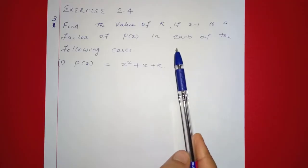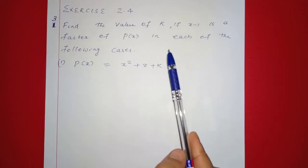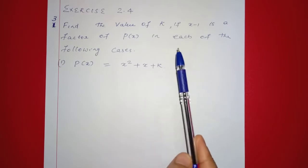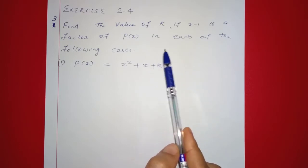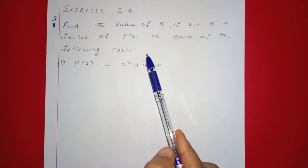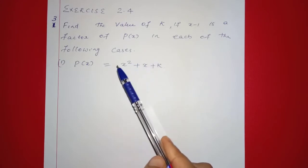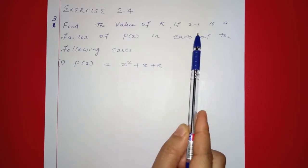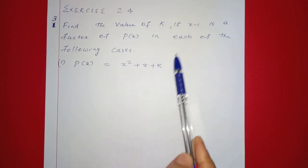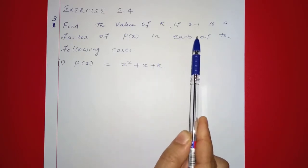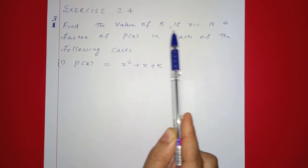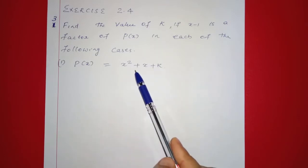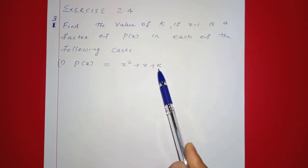Next, we will ask x is 2.4, third question: find the value of k if x minus 1 is a factor of p of x in each of the following cases. If we have 4 polynomials, we will ask x minus 1 is a factor. First, p of x is equal to x squared plus x plus k.